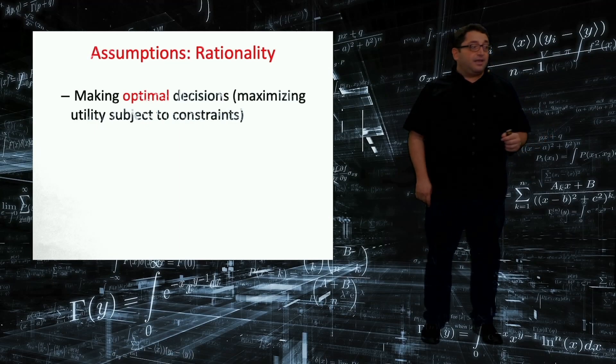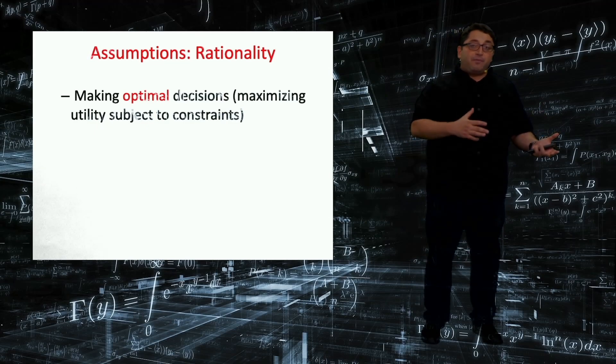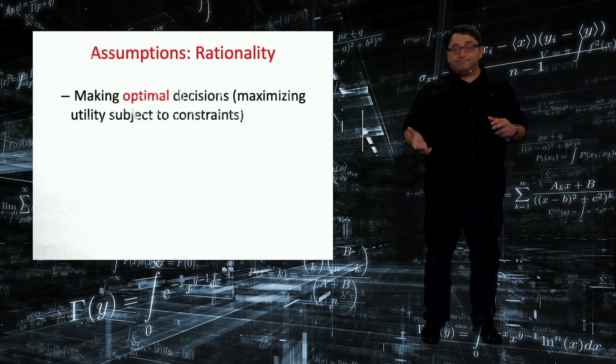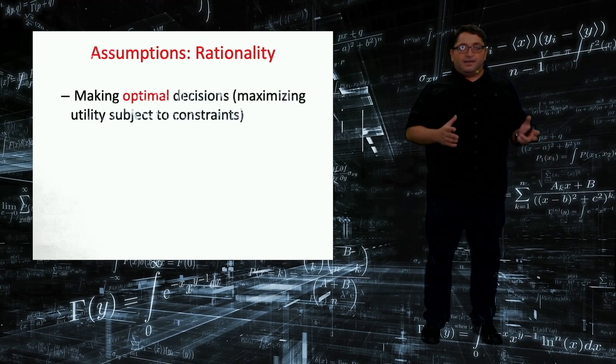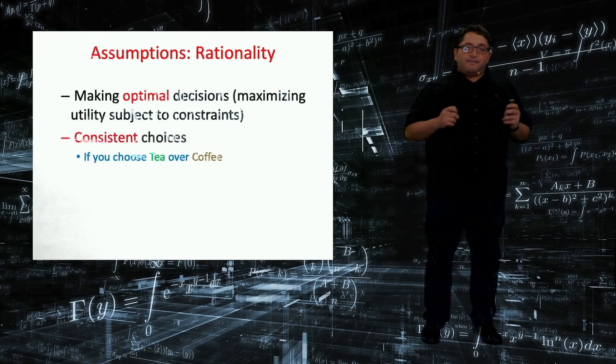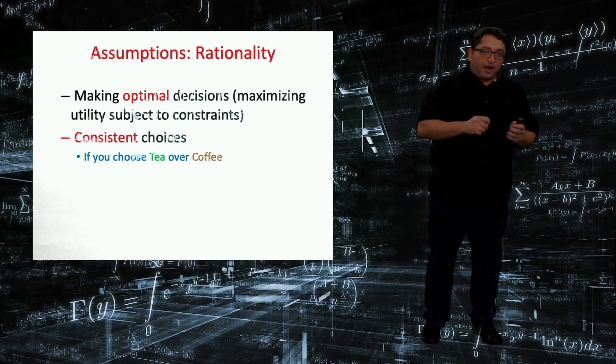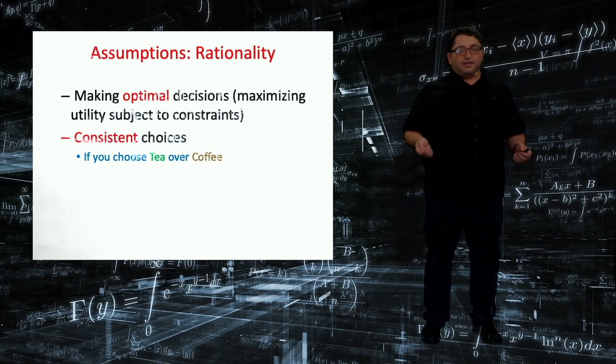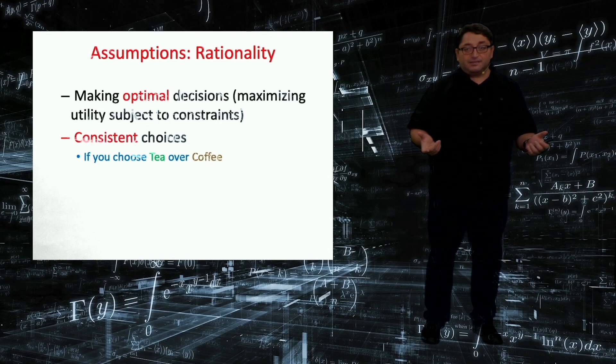I can say that my mother doesn't know calculus, so she cannot maximize a function. Does it make my mother not rational? Not necessarily so. In economics, rationality is making consistent choices. So we are revealing our preferences by making choices. And rationality is nothing but the choices being consistent.